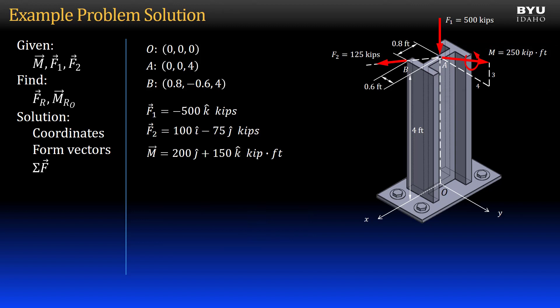Now, to get the resultant force vector, I sum the two forces. I do this by summing the I, J, and K components independently. I get 100i minus 75j minus 500k kips.